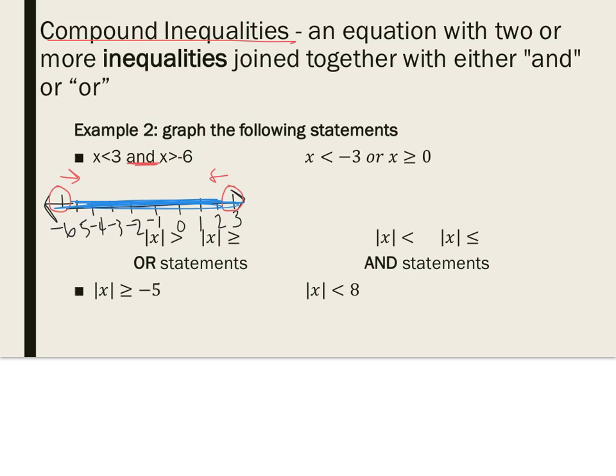This next statement over here, x is less than negative 3, or x is greater than or equal to 0. So, I have negative 3. At negative 3, I have an open point, because there's no equal to. At 0, I have a filled in point, because there is an equal to.